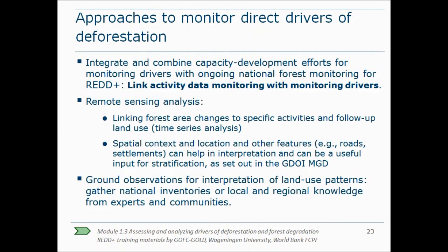Now I will talk a bit more about important aspects of monitoring drivers. As monitoring drivers requires resources and efforts additional to estimating and reporting greenhouse gas emissions, it is recommended that countries integrate and combine capacity development efforts for monitoring drivers with ongoing national forest monitoring. For example, linking activity data monitoring with driver monitoring would be a good place to start. With remote sensing data, deforestation areas can be mapped and directly linked to the follow-up land use, which gives an indication of the activities causing deforestation. Spatial context and location can also help in interpretation — for example, the size of the deforestation area gives a first indication about the driver and enables one to discriminate between commercial versus subsistence agricultural expansion.